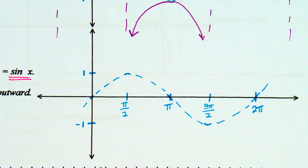Notice, my sine is a dotted line — a light dotted line. Preferably not a solid line because this is not technically my cosecant graph. I want your cosecant graph to be your solid line.